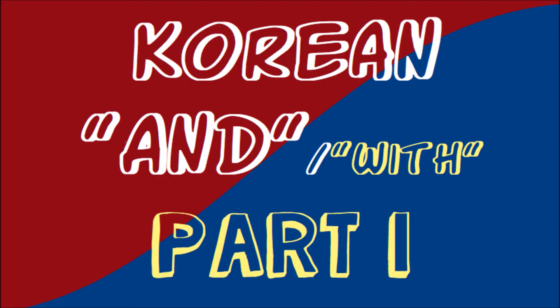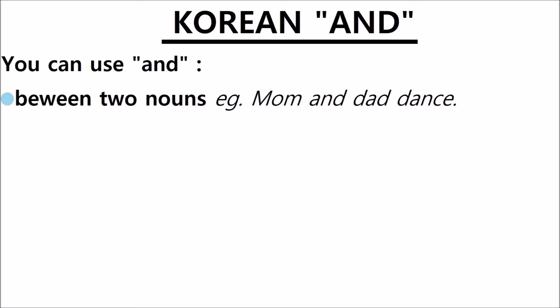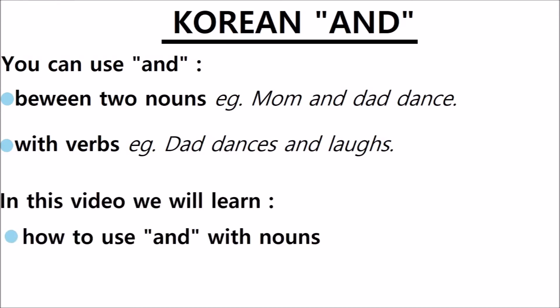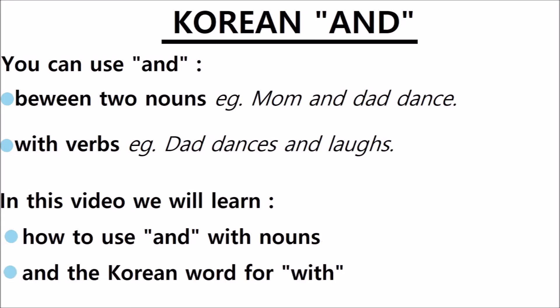Let's learn the Korean word for 'and' — or should I say words for 'and.' In Korean, there are two types of 'and': a type that goes between two nouns, and a type that goes between two verbs. In this lesson, we'll learn about the type that goes between two nouns. And we'll also learn the Korean word for 'with,' because that ties in very nicely.